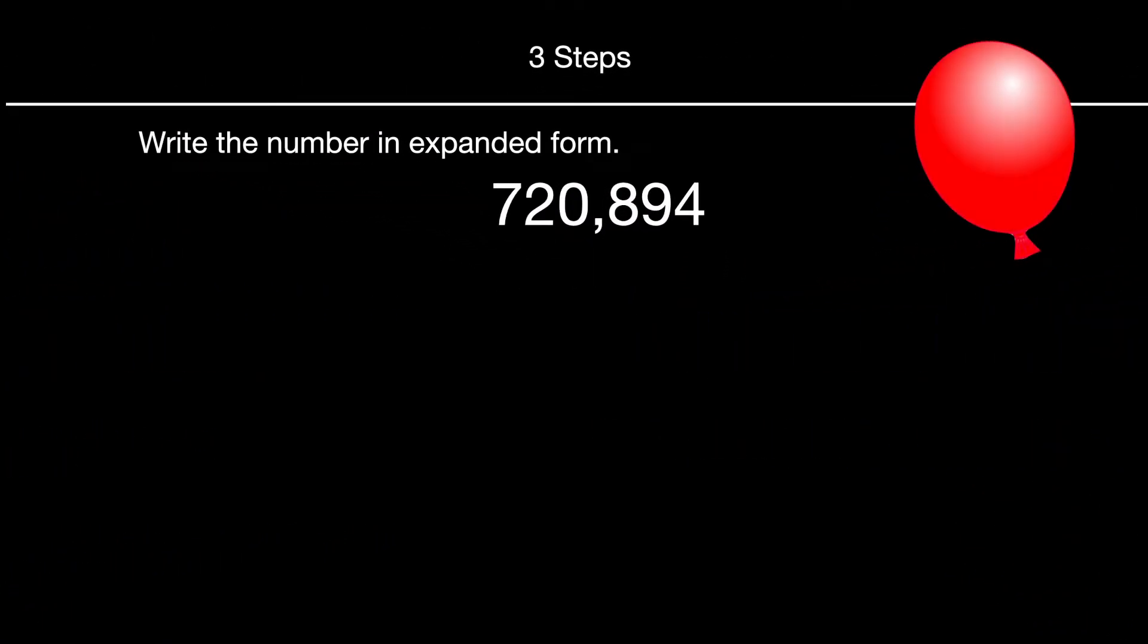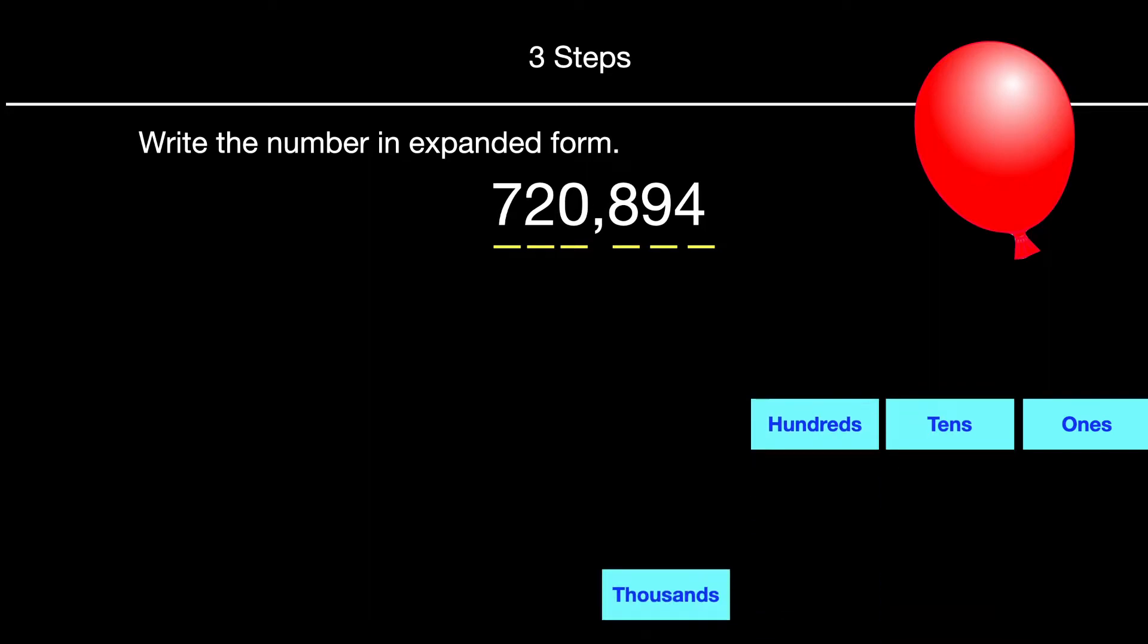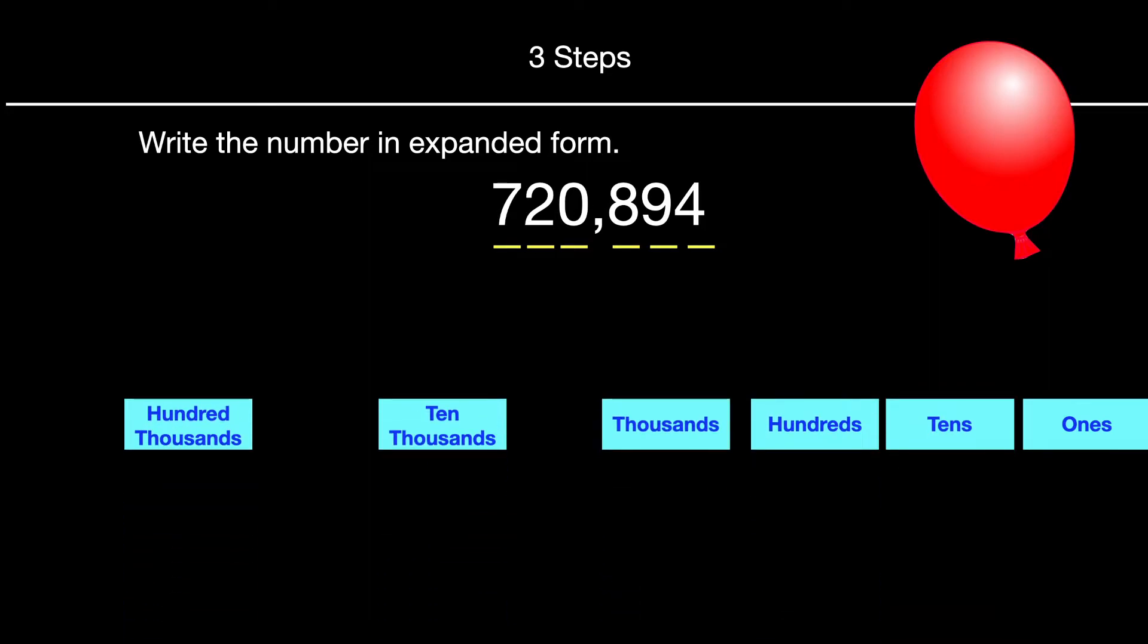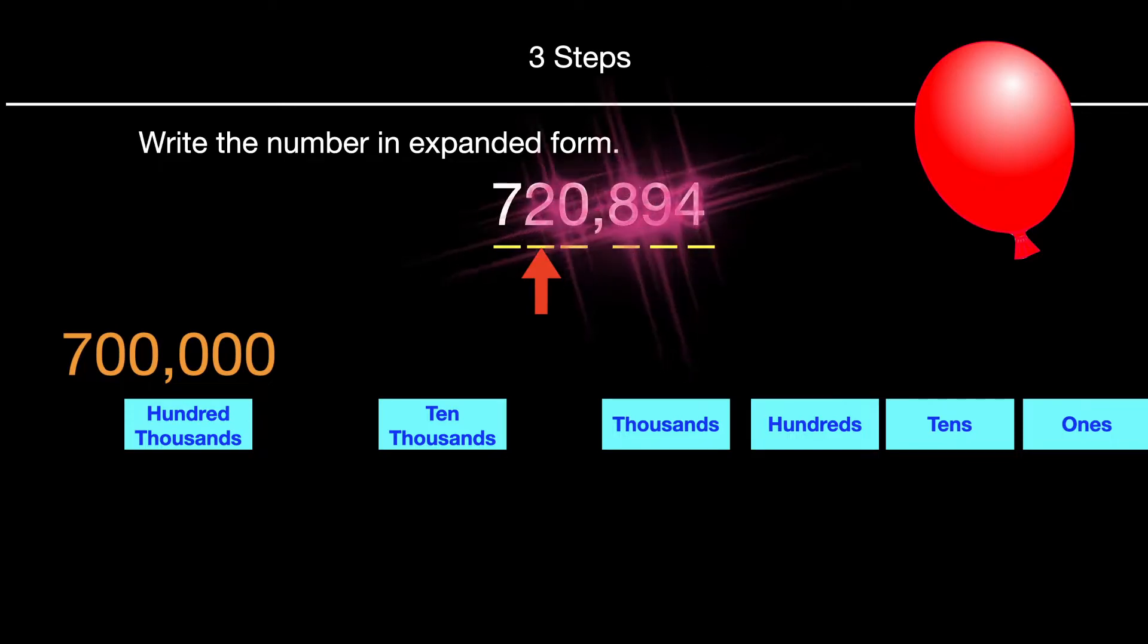Write the number in expanded form. So this is a six digit example. So first we will count our digits, and let's just keep showing the place value. When you're solving by yourself you don't have to write the place values, but we'll show it for now.